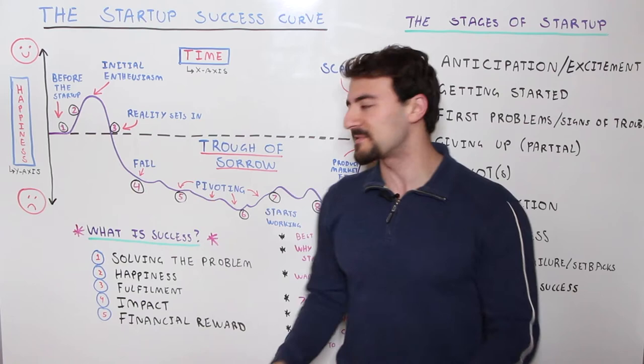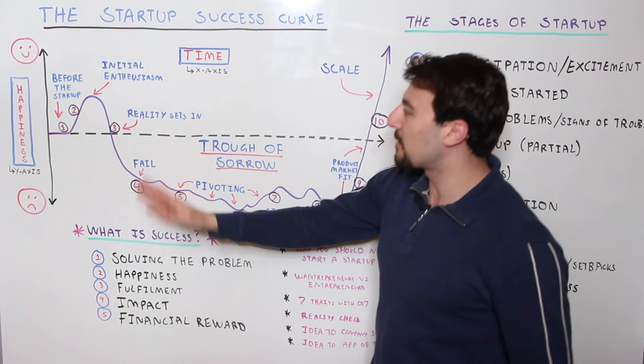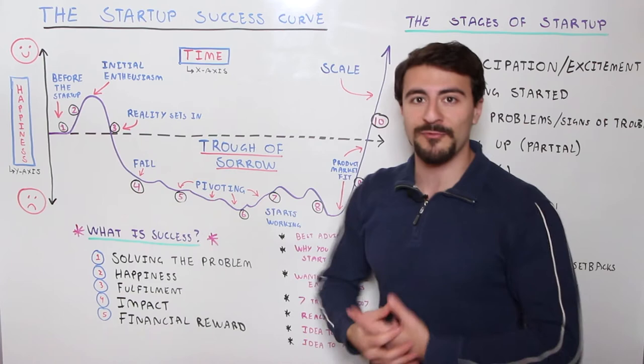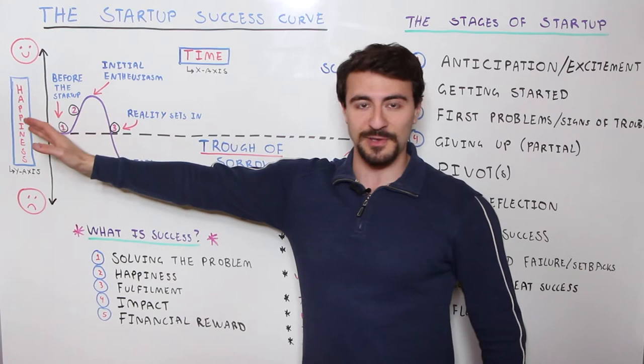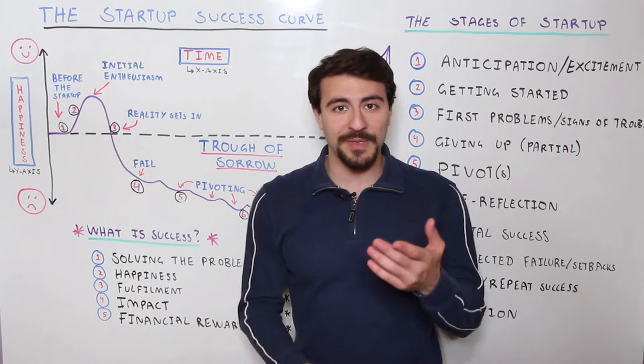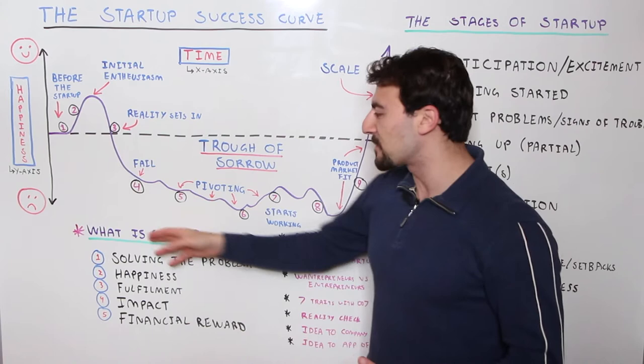When we think about the actual startup success curve, you can define these variables however you want. In this example we're going to use happiness — shout out to Paul Graham from Y Combinator, who really architected this from inception. On the x-axis we have time, going from left to right, and on the y-axis we have happiness. You can call it success, finances, impact — whatever resonates. Let me know in the comments what you define success as and which of the five variables fits best for you.